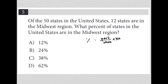So what part of the United States do we care about? We care about the Midwest region. How many states are in the Midwest region? 12. So 12 becomes our numerator. What is the whole? The whole of the United States is 50 states, so that becomes our denominator.